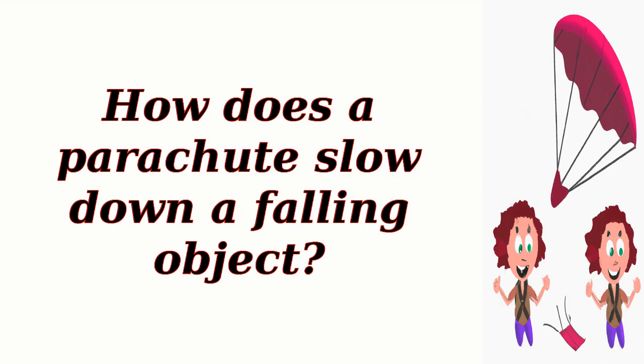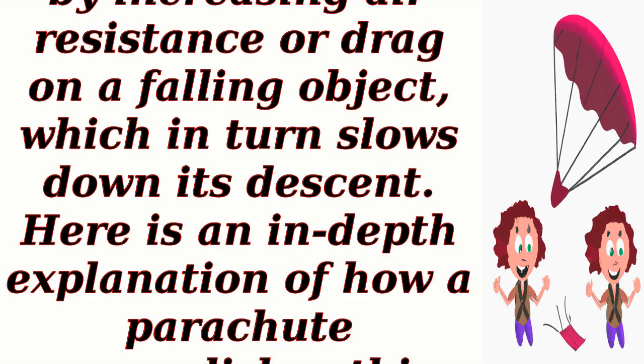How does a parachute slow down a falling object? A parachute works by increasing air resistance, or drag, on a falling object, which in turn slows down its descent. Here is an in-depth explanation of how a parachute accomplishes this.